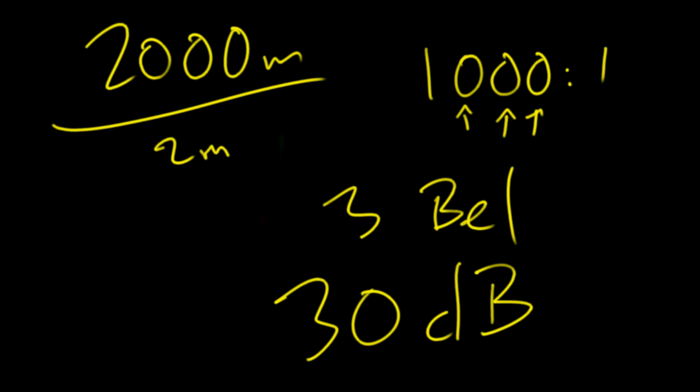When we add a bell, we multiply the ratio by 10. Adding or subtracting bells or decibels is the same as multiplying or dividing the ratios themselves. Decibels are handy because they describe quantities that vary widely over many orders of magnitude, and they give us mathematical shortcuts—letting us add or subtract instead of multiplying or dividing.